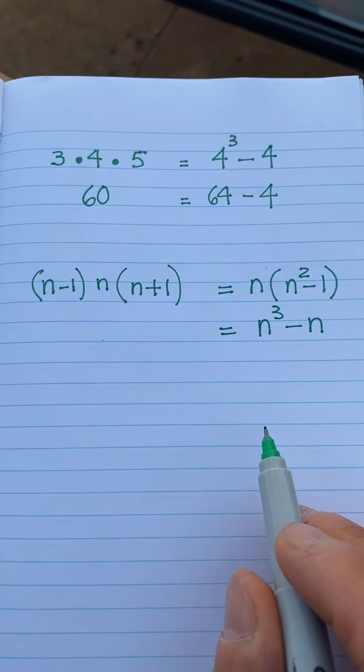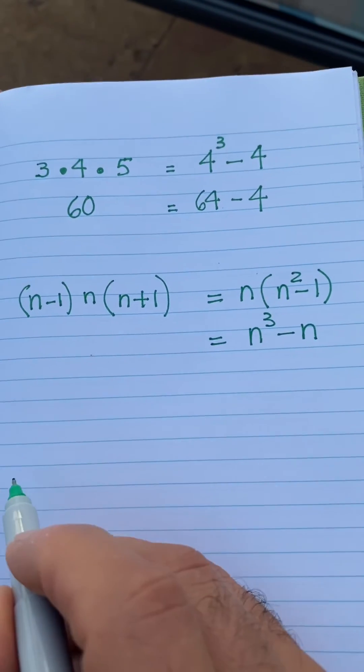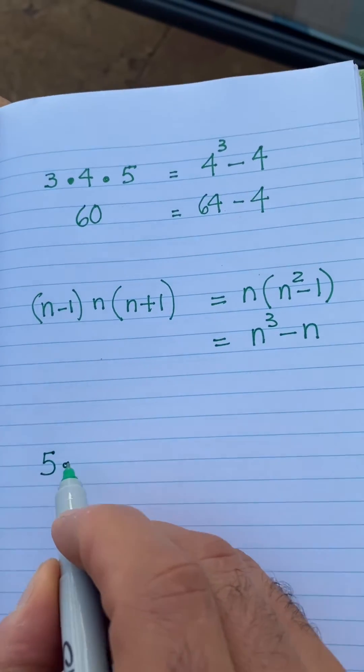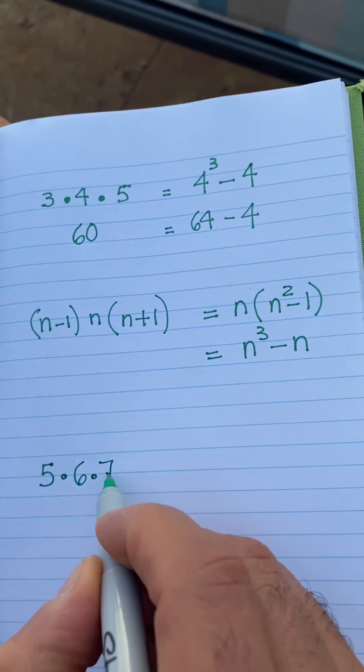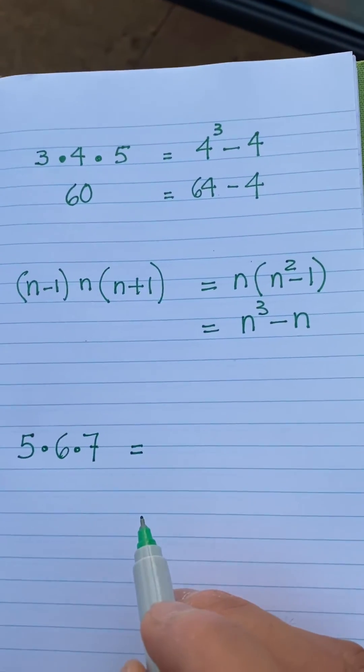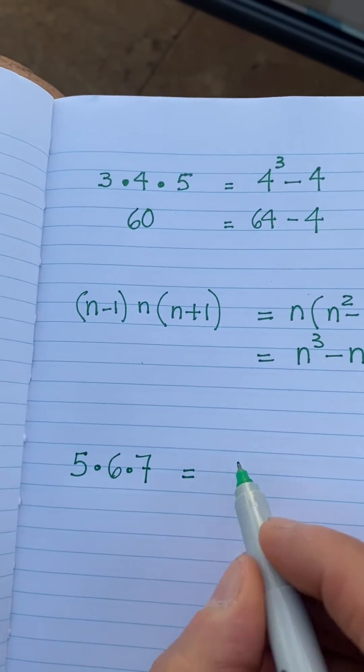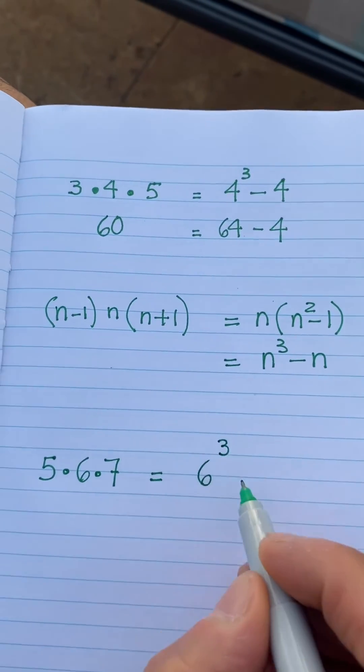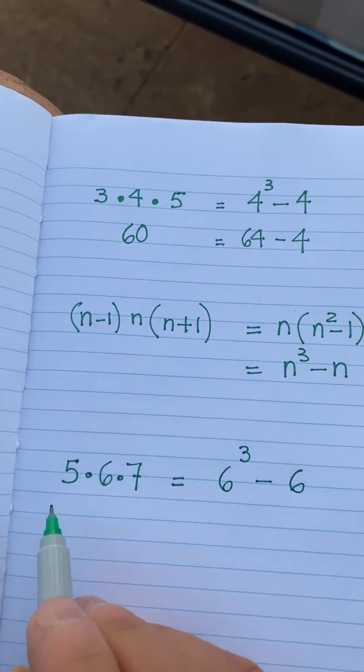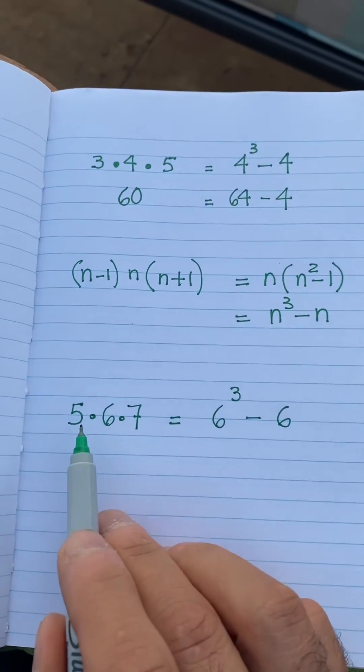You want to do another example? Let's say 5×6×7. What do we do here? Well, the middle number is 6. If I take the middle number, cube it, and subtract the middle number again, I say those are going to be equivalent. You don't believe me? Let's try.